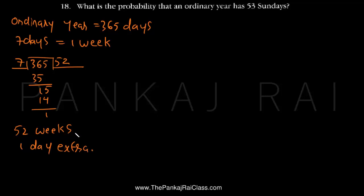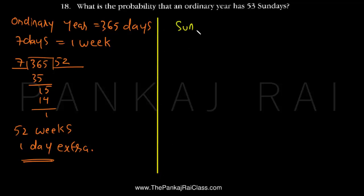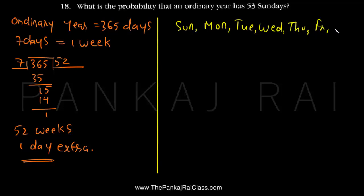So if there are 52 weeks, that means each and every day from Sunday to Saturday will come 52 times. But one day will come 53 times — and which day that is depends only on which day the year has started with. For example, if the year starts from Sunday there will be 53 Sundays; if it starts from Monday, 53 Mondays; Tuesday, 53 Tuesdays; and so on through 53 Wednesdays, 53 Thursdays, 53 Fridays, and 53 Saturdays.